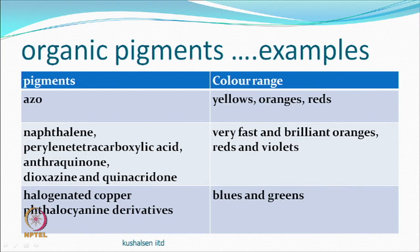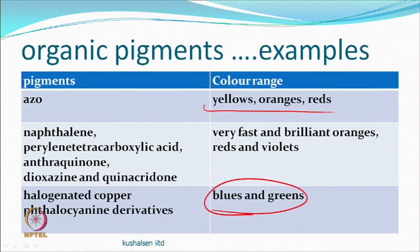Phthalocyanine derivatives containing metals like copper are also important pigments. Copper phthalocyanine gives beautiful blues and greens — direct dyes based on phthalocyanine derivatives were also known for blues and greens, giving a range from beautiful blues through to oranges, reds, and violets.